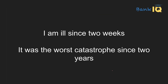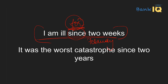'I am ill since 2 weeks' — यह गलत है। Correct forms are: 'I have been ill for 2 weeks' (quantity of time) and 'I have been ill since February' (specific time). Similarly, 'It was the worst catastrophe since 2 years' is incorrect; correct is 'It was the worst catastrophe in 2 years.' यहाँ 'in' का प्रयोग होगा, 'since' का नहीं।